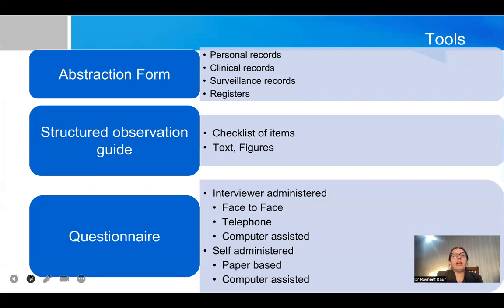Data can be collected from various tools. It can be in the form of an abstraction form which is the review of records. You can review personal records or clinical records. For specific observations we can go through a structured observation guide in which there is a checklist of items and the subject ticks according to that checklist. But the most commonly used is questionnaire based. It can be interviewer administered or self-administered in which the participants are considered to be knowledgeable. An interviewer administered questionnaire can be face-to-face or telephonic or computer assisted questionnaire also.